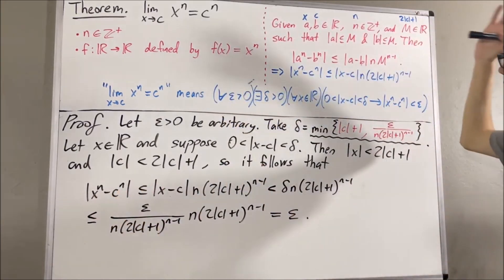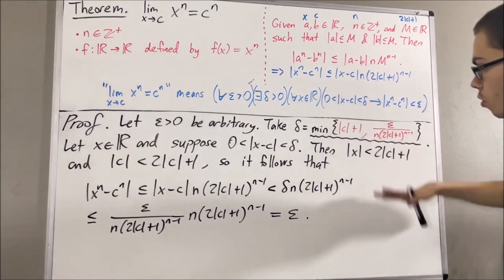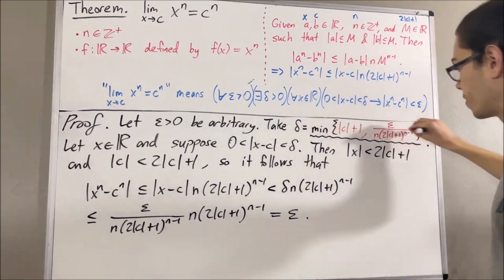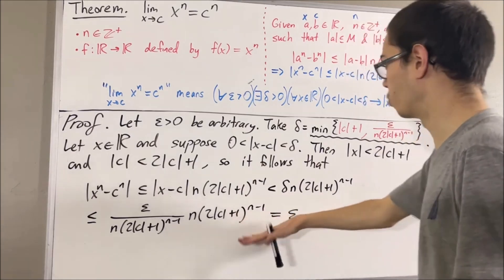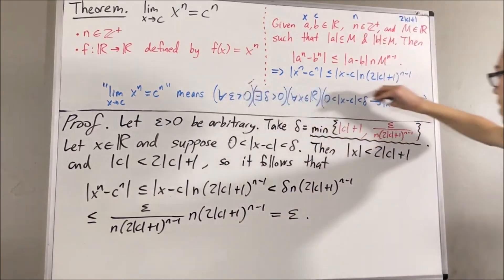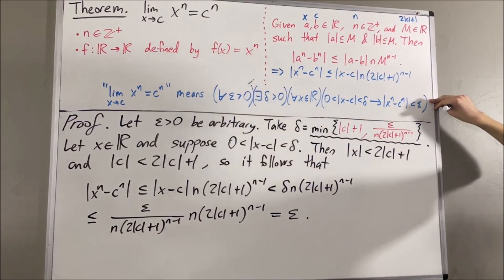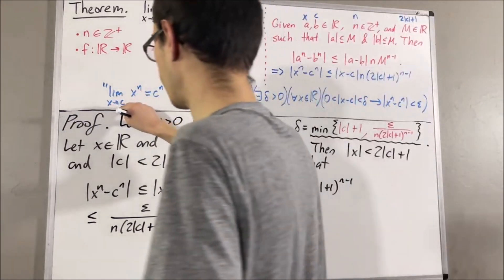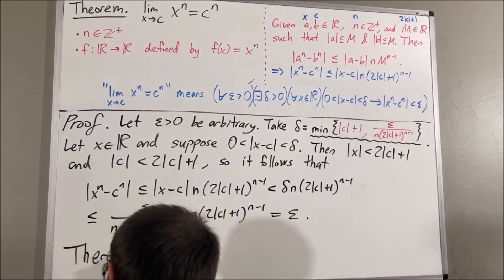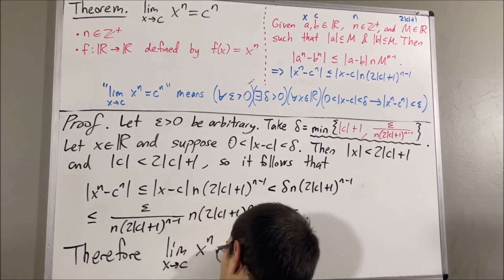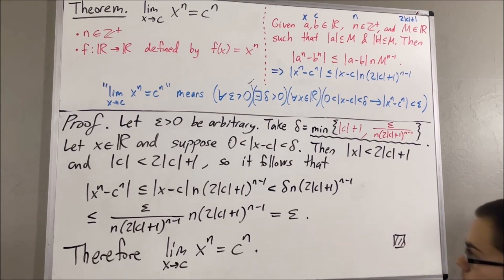This shows that the absolute value of x to the n minus c to the n is less than epsilon, which is exactly what we wanted to show. With this choice of delta, this argument follows and we have shown the entire epsilon-delta statement is true, which proves that the limit as x approaches c of x to the n is equal to c to the n. This completes the proof.